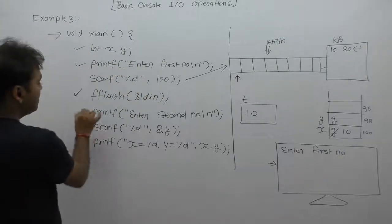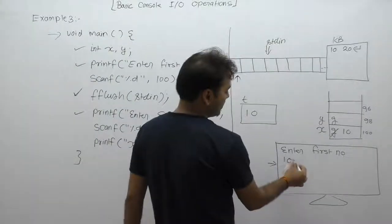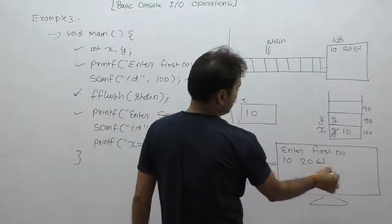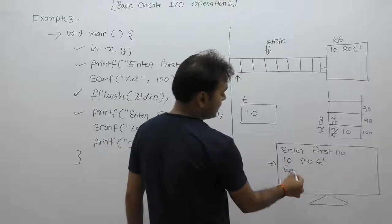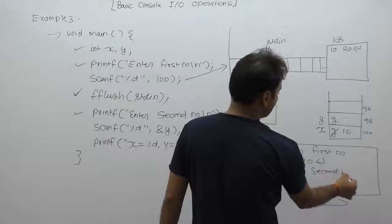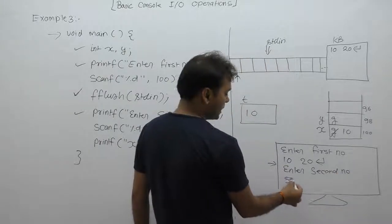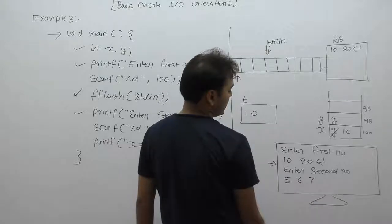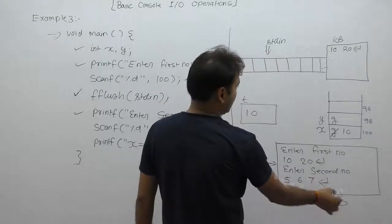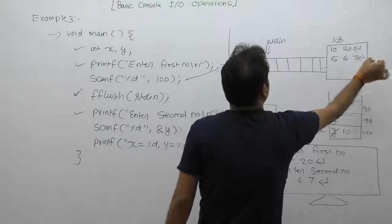Next time, again, enter second number. Then when next time again, input something like 5 space 6 space 7 like that. Finally enter key: 5 space 6 space 7 and enter key.